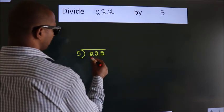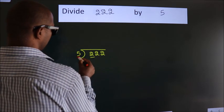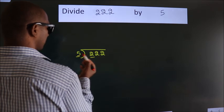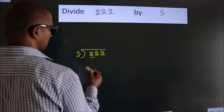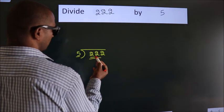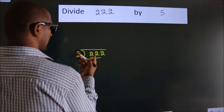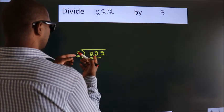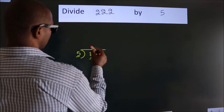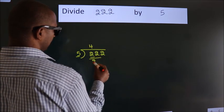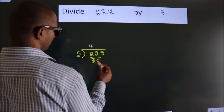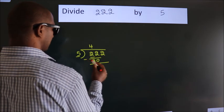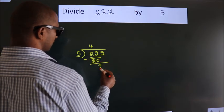Here we have 2, and here 5. Since 2 is smaller than 5, we should take 2 numbers: 22. A number close to 22 in the 5 times table is 5 fours 20. Now we should subtract. We get 2.